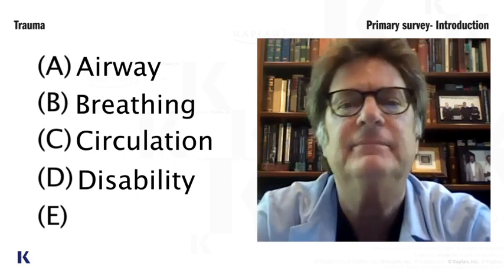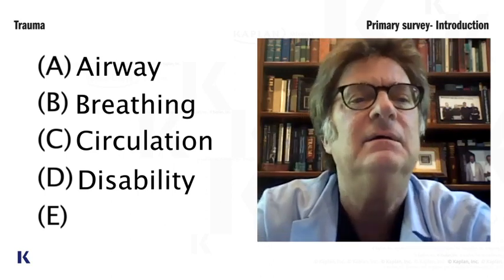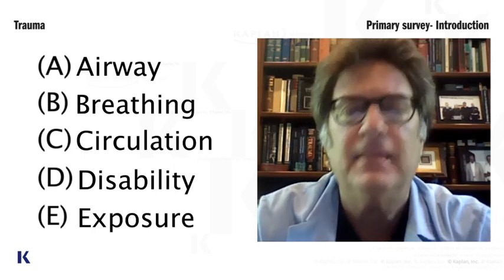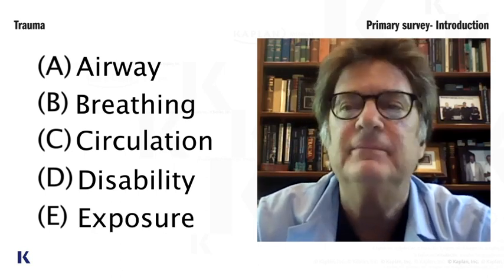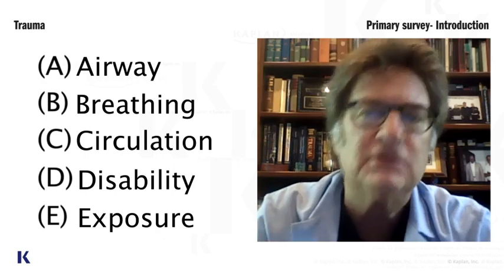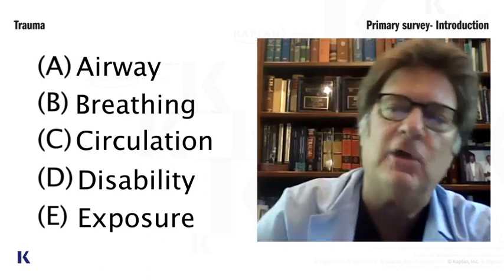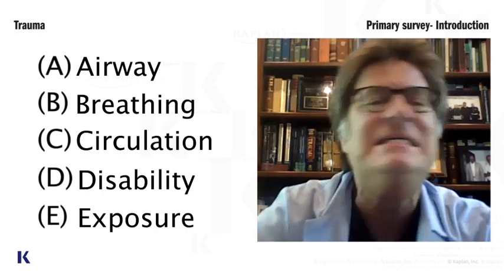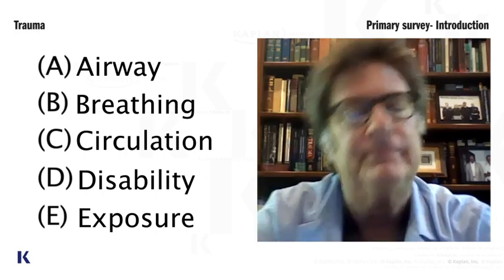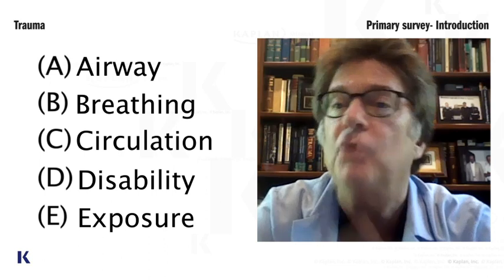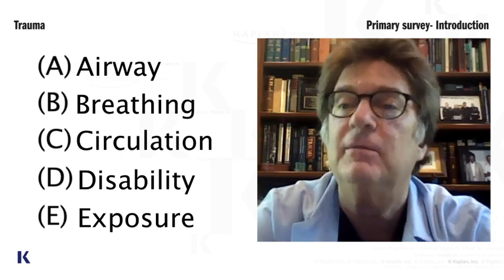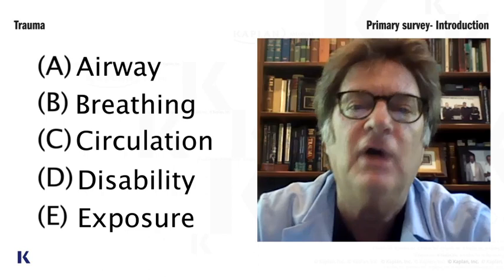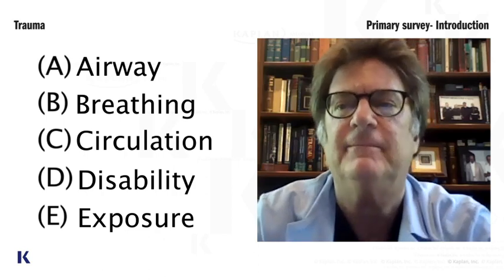And E is exposure and environment. A — airway, B — breathing, C — circulation, D — disability/the brain, and E — exposure and environment. These are in the order of priority. What do I mean by that? Well, if you didn't have an airway, would you survive? No. So the ABCDE is also the order of priority.